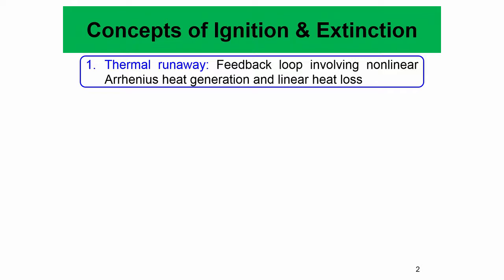By explosion we mean a thermal runaway — there is no actual explosion involved. It is just a thermal runaway where the temperature can rise quickly in a given mixture because of combustion reactions. It is essentially caused by a feedback loop involving non-linear Arrhenius heat generation and linear heat loss.